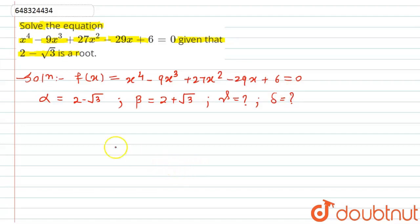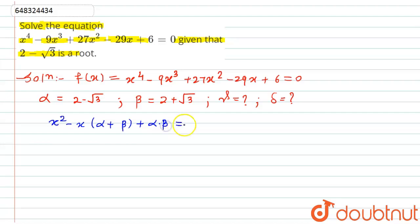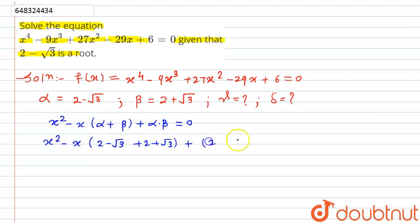The general form of a quadratic equation is x² - x(alpha + beta) + alpha×beta = 0, where alpha + beta is the sum of roots and alpha×beta is the product of roots. So we write: x² - x[(2 - √3) + (2 + √3)] + (2 - √3)(2 + √3) = 0.